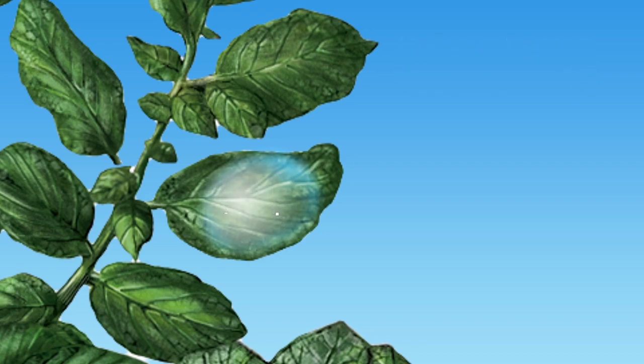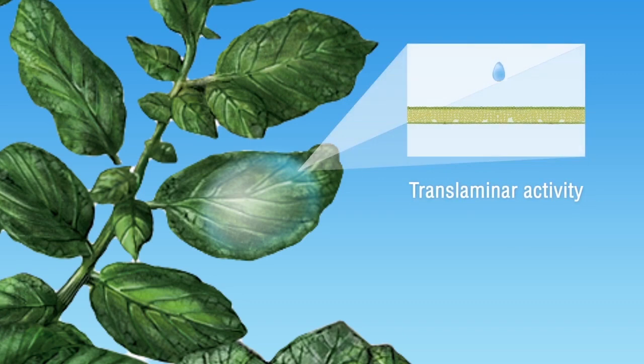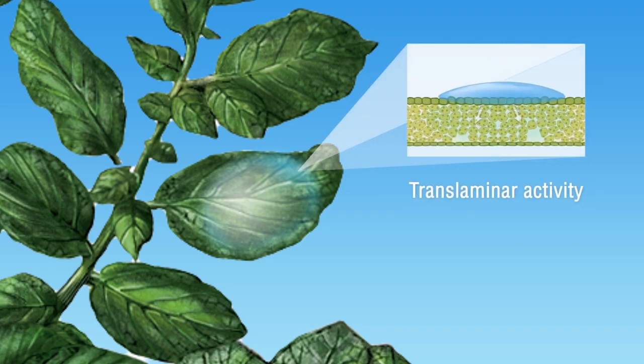Fluopicolide, the innovative active ingredient in Infinito, moves into the leaf. Its translaminar activity ensures that the lower side of the leaf is protected as well. Mycelium growth is inhibited inside the leaf and sporangia formation prevented on the lower side of the leaf.